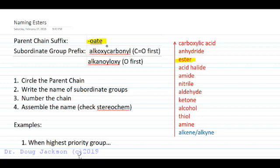Then we use the priority suffix -oate. And if the ester is not the highest priority group, say it is lower than carboxylic acid or anhydride, then we'll name the compound as a carboxylic acid or anhydride, and use the ester subordinate groups: if the carbonyl is first, an alkoxycarbonyl group, or if the oxygen is attached to the parent chain, an alkanoyloxy.